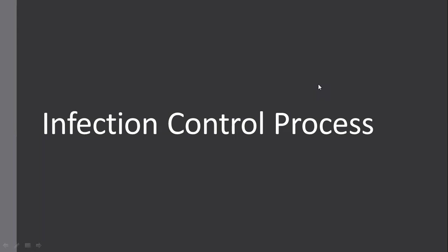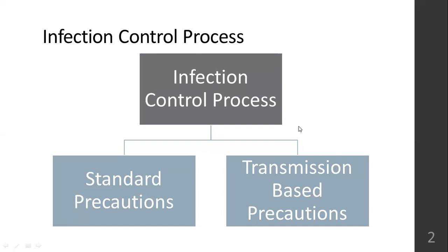Reading the chapter of Personal Protective Equipment is a self-study chapter, so you have to read it on your own and understand it. Infection control processes has two main processes: standard precautions and transmission-based precautions. We use a risk management approach to minimize or prevent the transmission of infection. This is a two-tiered approach.